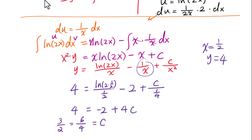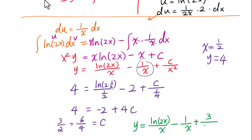So the final answer is y equals natural log of 2x over x minus 1 over x plus 3 over 2x squared.